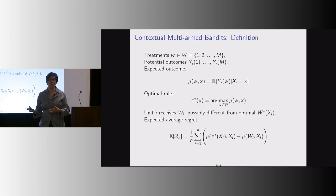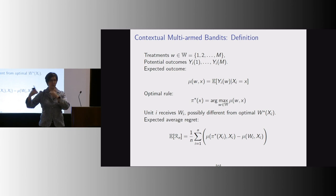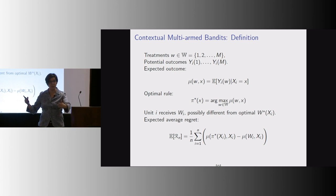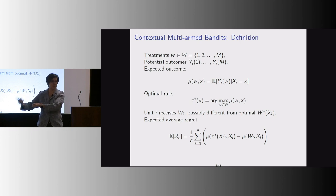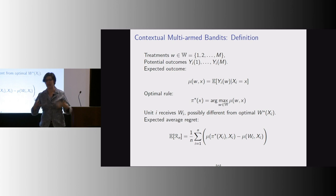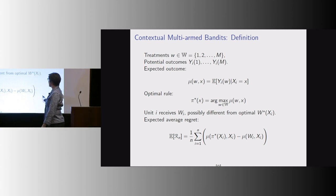That makes it really hard to compare different algorithms. Because if you run a bandit once, you only see the potential outcomes for the people you assigned to. If you want to know counterfactually what would happen with a different statistical method, you can't use the data to do that — a different method would have assigned different arms to different people. So your existing data can only be used once. This is one reason I'm building my platform, and why most of this literature is simulation-based with very few empirical applications.